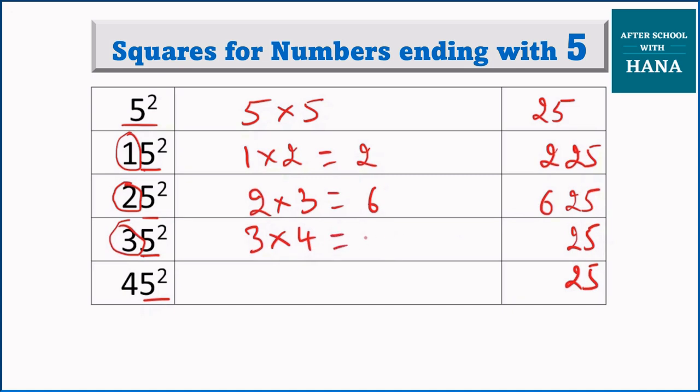45 squared. We will multiply 4 by 5, which is equal to 20. So this becomes 2025. Let us take some other numbers now. We have other numbers on the other sheet here.